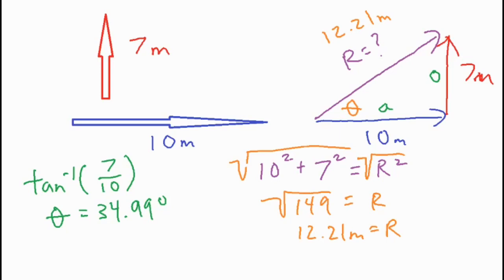Okay, now you can call that 34.99 degrees above the horizontal, or you could call it 34.99 north of east. Because this is directly east, so then if you tilt it up this way towards the northern part...